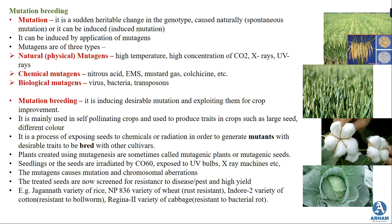Natural mutagens include high temperature, high concentration of carbon dioxide, X-rays, and UV rays. Chemical mutagens include nitrous acid, EMS (ethyl methyl sulfonate), mustard gas, and colchicine. Biological mutagens are organisms like viruses and bacteria that can cause such mutations or changes in the genotype.